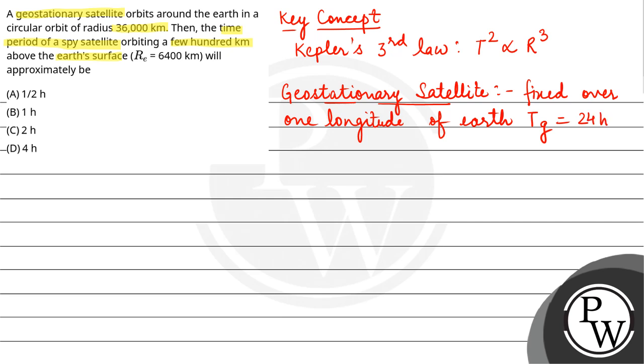Now, in the question, we are given the radius of the geostationary satellite orbit as 36,000 km and the time period of the geostationary satellite as 24 hours.